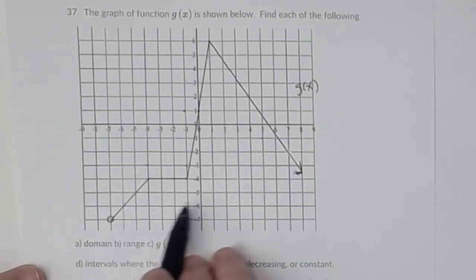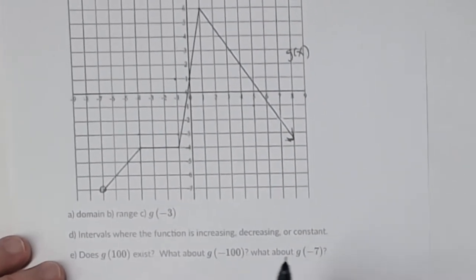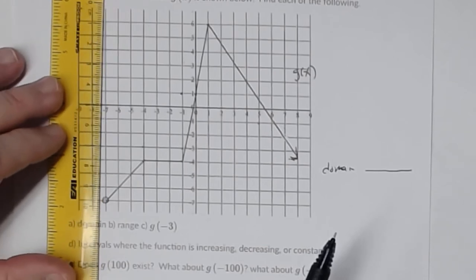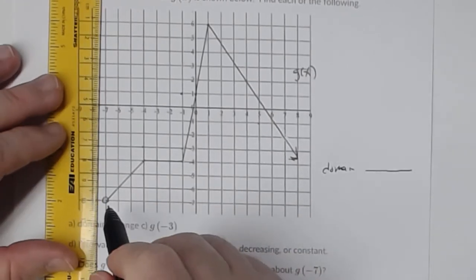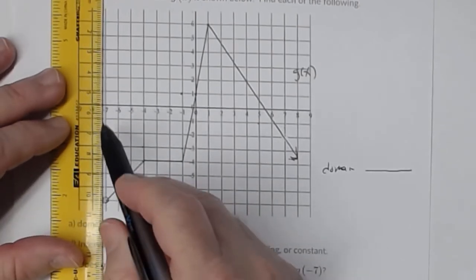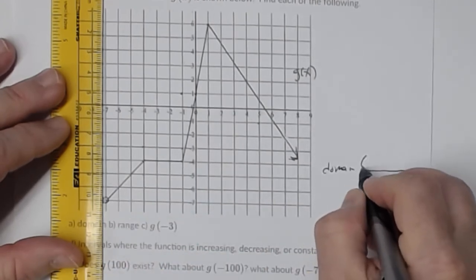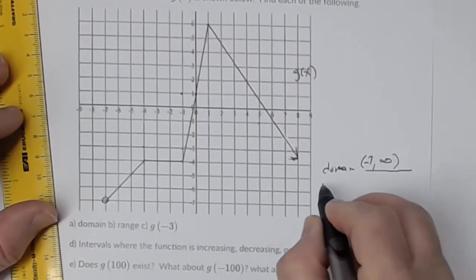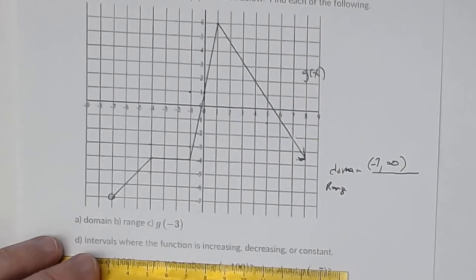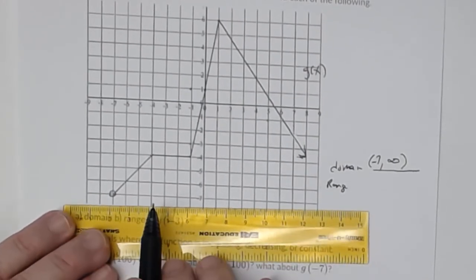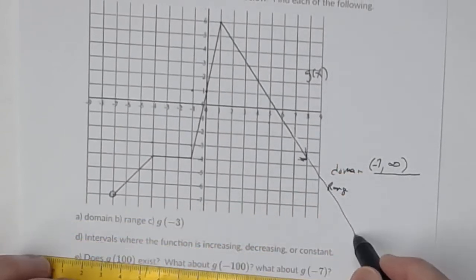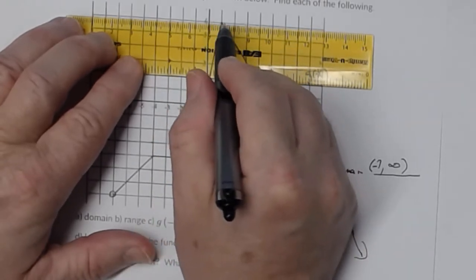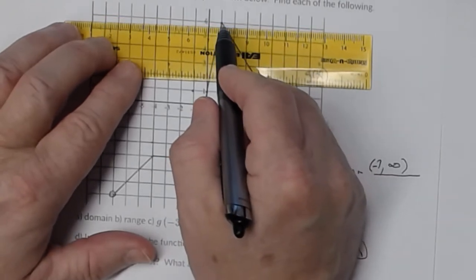Now let's look at number 37. You're given g of x — this function has an open circle on one end and an arrow on the other. For the domain, going from left to right, I start touching the graph at x equal negative seven, but that's an open circle, so it gets a parenthesis. The domain is open interval negative seven to infinity, since the arrow keeps going.